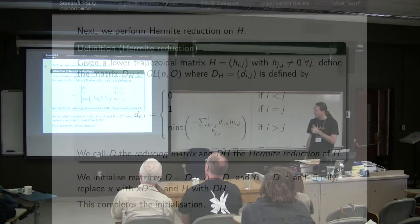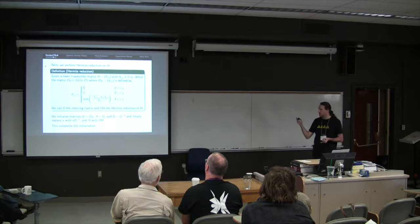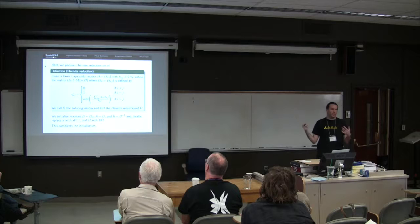And then we initialize our matrices D to be just this first Hermite reduction matrix of H. We set A to be D, B to be D inverse. Then we replace X with XD inverse and H with DH. And we've finished initialization.